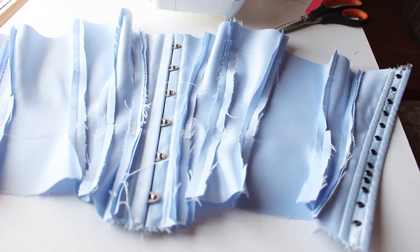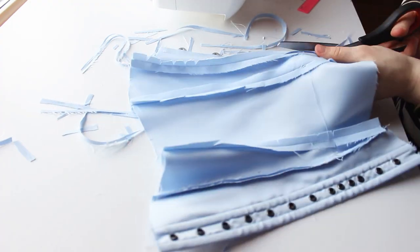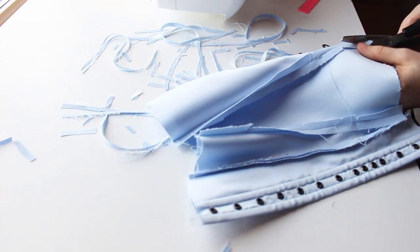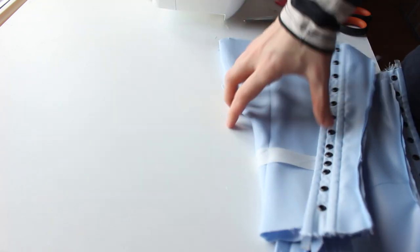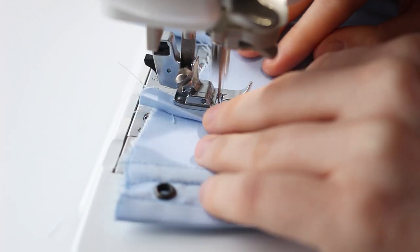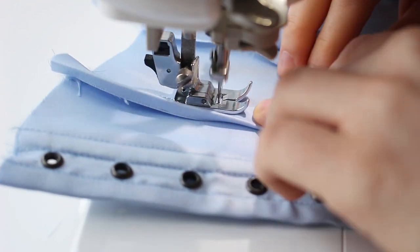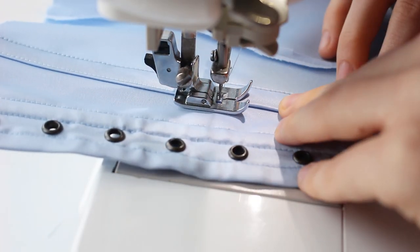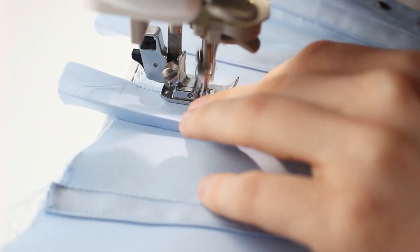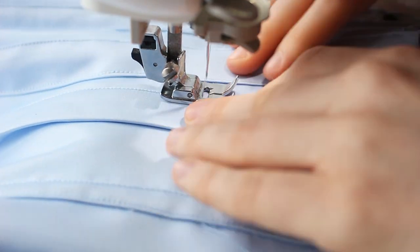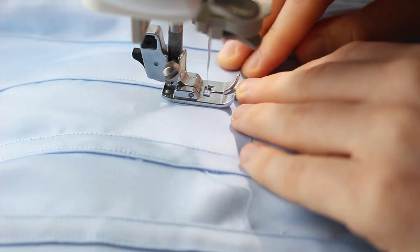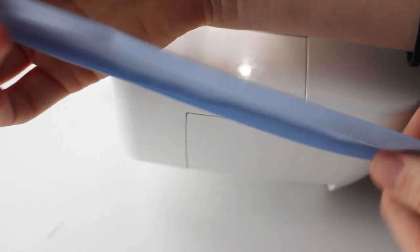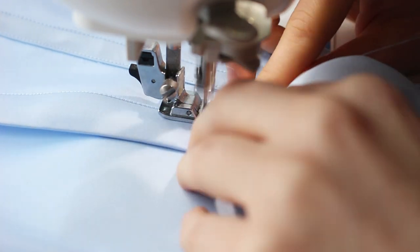The next step was adding boning channels. I trimmed all seam allowances so they could be hidden under them. I started with smaller channels. I centered the tape over the seam and very slowly stitched each side to the corset, checking from time to time if the tape is still centered over the seam. Then I stitched the channels on panels 2 and 3 using the notches at the top and bottom as a guide. When all 12 narrow channels were done, I stitched 4 wider ones to the panel 4 and over the seam between panels 4 and 5.